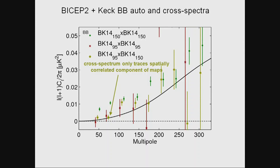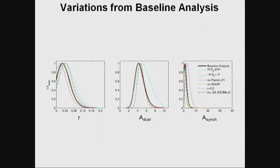Going through the statistical analysis, one has to conclude we've detected a lot of dust. The amplitude of dust is ruled out at zero to high significance — we see dust at high significance. But we can't claim a tensor signal anymore; zero is not ruled out at all after throwing in Planck 353 GHz and Keck 95 GHz data.